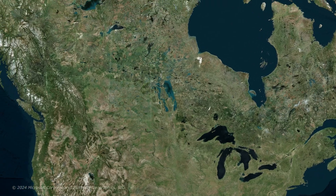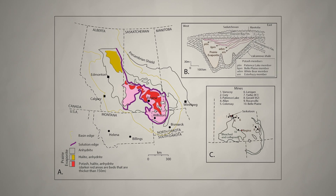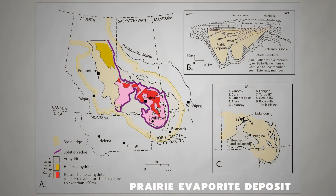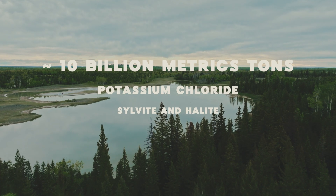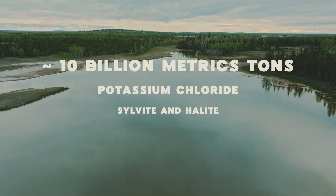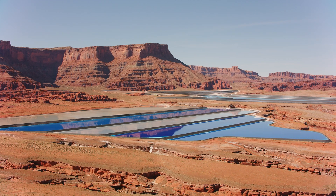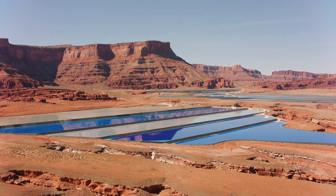The world's richest deposit of potassium is located in western Canada in a province known as Saskatchewan. It is the prairie evaporite deposit, which has maybe 10 billion metric tons of potassium chloride in the form of sylvite and halite, located in deep mine shafts. They pump a solution of brine deep into these mine shafts, pump it back to the surface, evaporate it, and harvest that potassium chloride, which they export all over the world as potassium fertilizer, also known as potash.